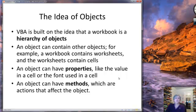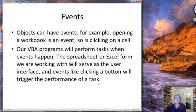An object can have various attributes. For example, it has properties, such as the value in a cell or the font used in a cell — those would be properties of the cell or the format. An object can also have methods, which are actions that affect the object, and we'll see more examples of those as the course goes on.